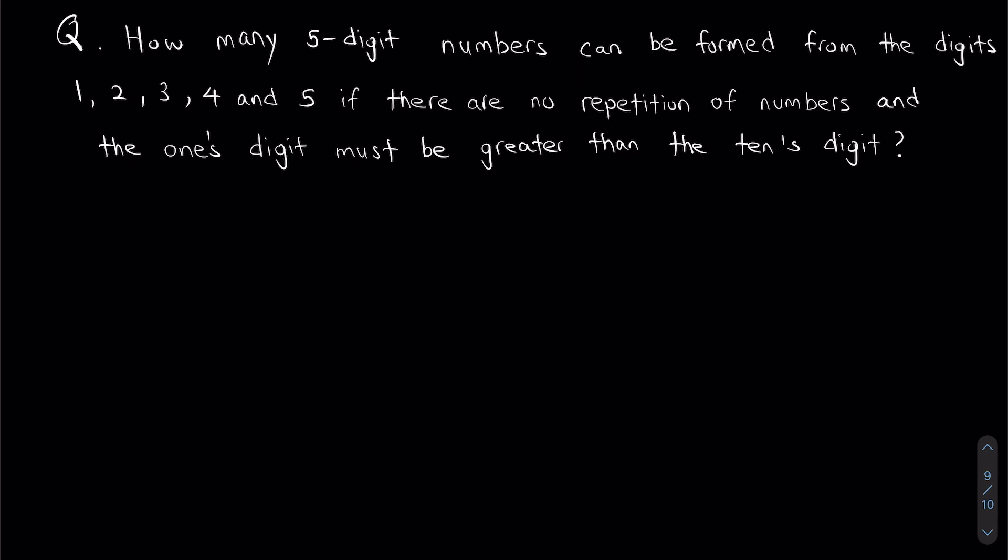five-digit numbers can be formed from the digits 1, 2, 3, 4, and 5 if there are no repetition of numbers and the ones digit must be greater than the tens digit?